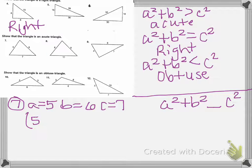So I have 5 squared plus 6 squared. We don't know our sign, 7 squared.